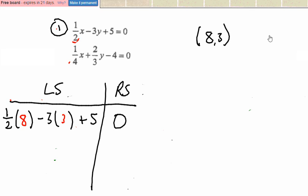satisfies the left side balancing the right side. So one half times 8 is 4. 3 times 3 is 9. So negative 9 plus 5. And 4 minus 9 is negative 5 plus 5 is 0. So that left side right side check worked.